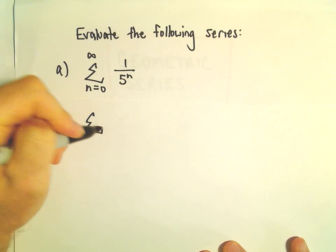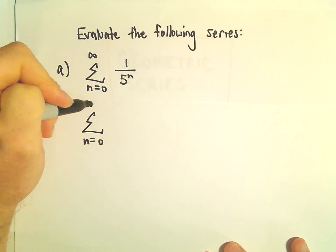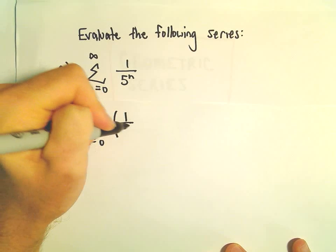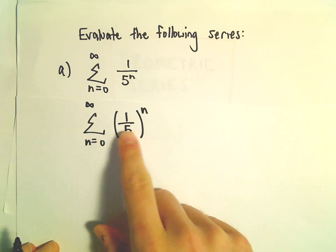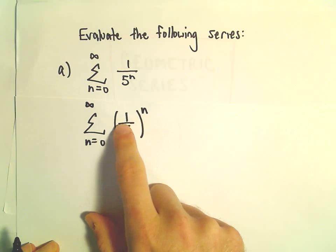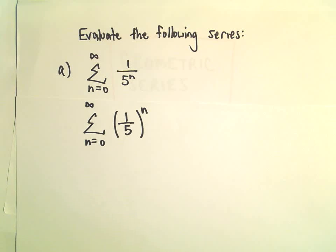So in this case I'm going to rewrite it, n equals 0 to infinity. I'm just going to write it as 1 over 5 all raised to the n power. If we take 1 to the n power in the numerator, 1 to the n is just 1.